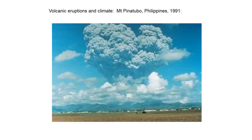The other thing we're going to consider is volcanic eruptions. This is the eruption of Mount Pinatubo in 1991 — a very large eruption that injected a lot of material into the atmosphere: volcanic ash and also gases that are climatically important. We'll go on to explain why those gases are climatically important and how they might change the climate.